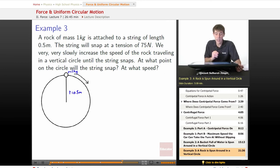All right, and the string snaps at a tension of 75 newtons. That's when the string will suddenly snap. Okay, so we very, very slowly increase the speed of the rock traveling in a vertical circle until the string snaps on us.